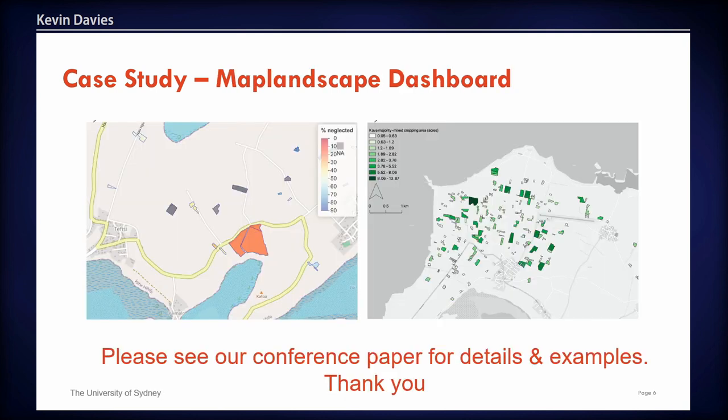These are some examples of the map outputs from the dashboard we developed. On the left, a map shows tax allotments or areas of land that are underutilized, allowing the Ministry to dedicate resources to improve farming and food security. On the right, a map shows the density of kava being planted in different plots.